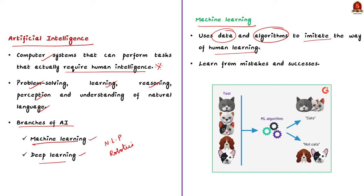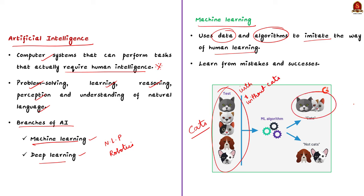Machine learning uses data and algorithms to imitate the way that humans learn, and it gradually improves its accuracy. For example, imagine you want to teach a computer how to recognize cats. Instead of telling it what exactly a cat looks like, you show the computer many pictures with and without cats. Slowly, it learns to tell the difference and gets better with practice. In simple words, machine learning is about training computers to make decisions based on data and examples rather than explicit instructions.